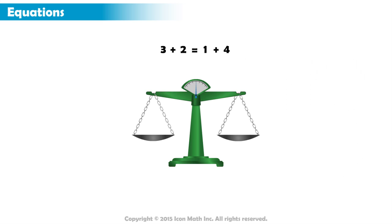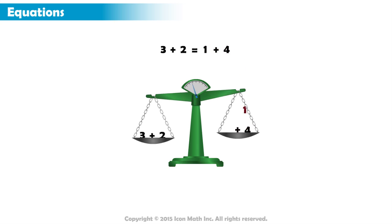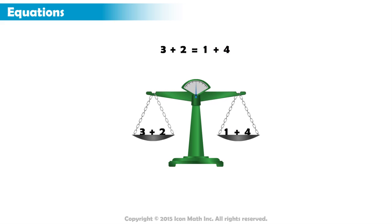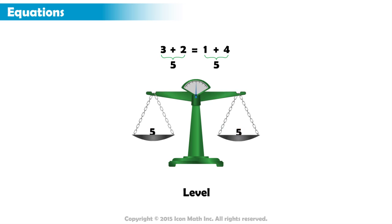First, let's place the left side of our equation, 3 plus 2, on the left side of the pan balance. Now, let's place the right side of the equation, 1 plus 4, on the right side of the pan balance. Notice, the pan balance will remain level because 3 plus 2 equals 5 and 1 plus 4 equals 5.